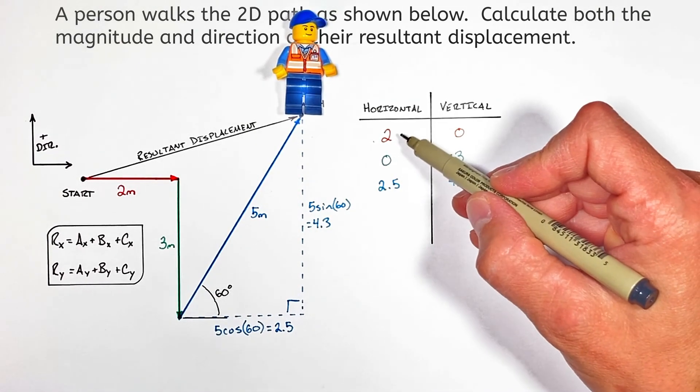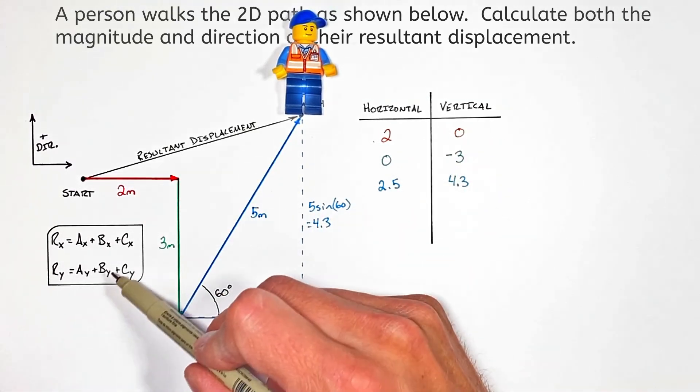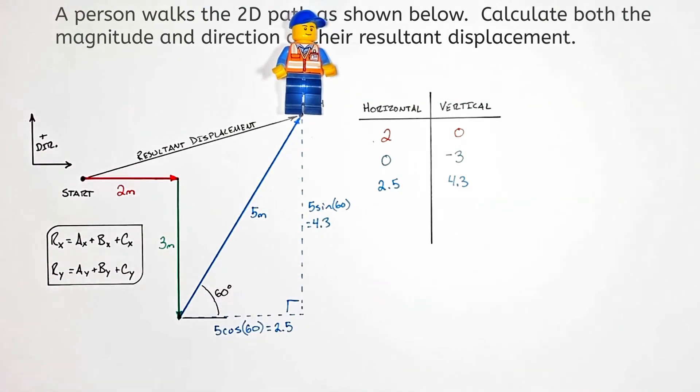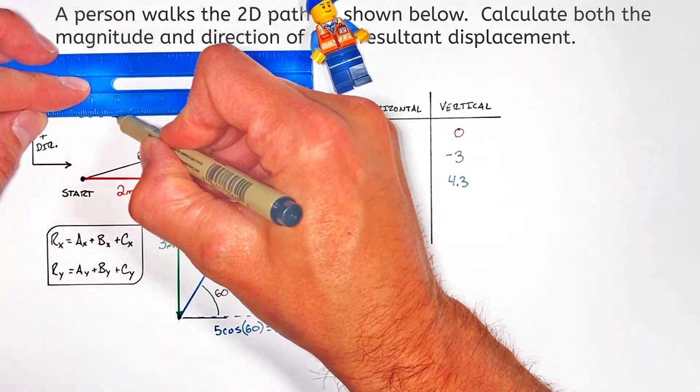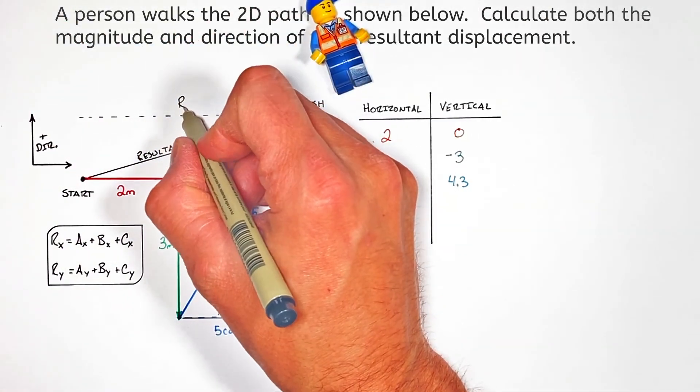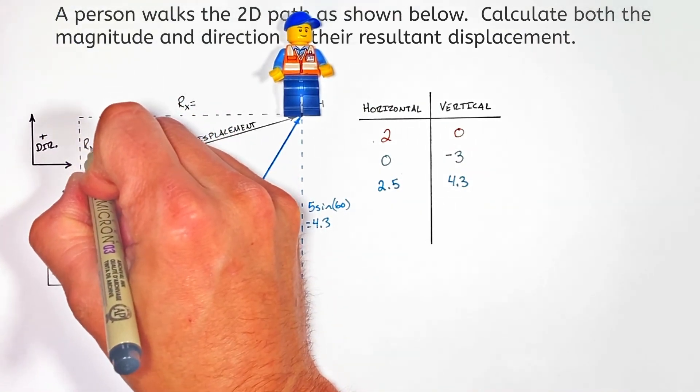Now that we've worked out the horizontal and vertical components of all three of our vectors, we can go back to this original equation to come up with a resultant vector. This first equation is telling us the horizontal component of our resultant vector.